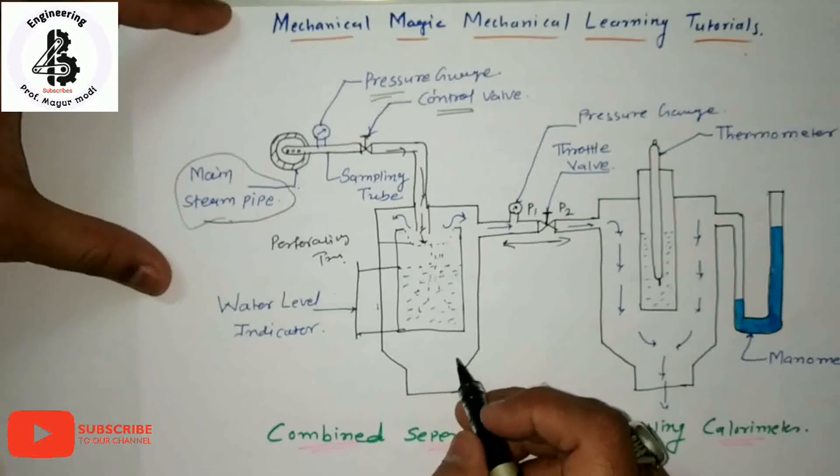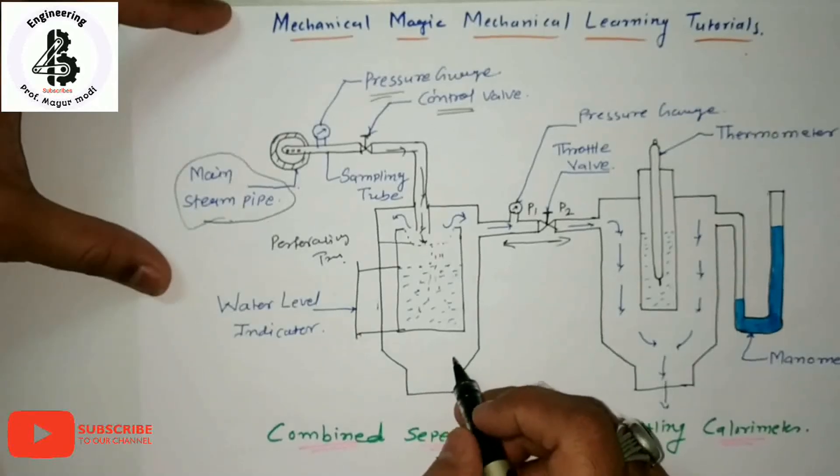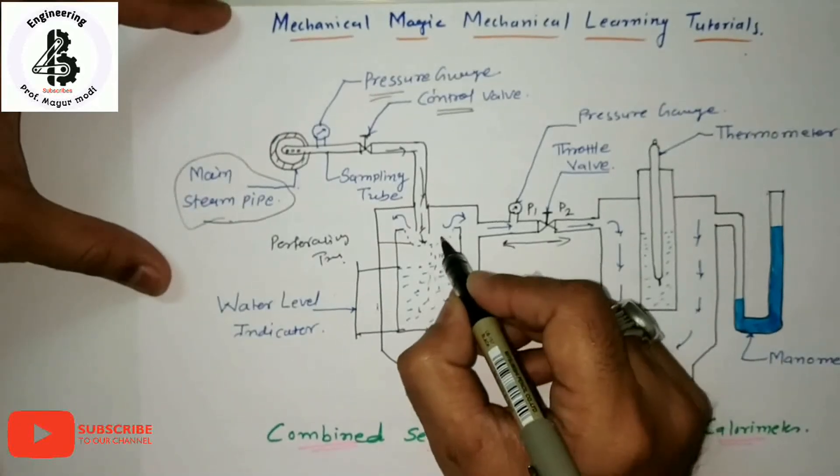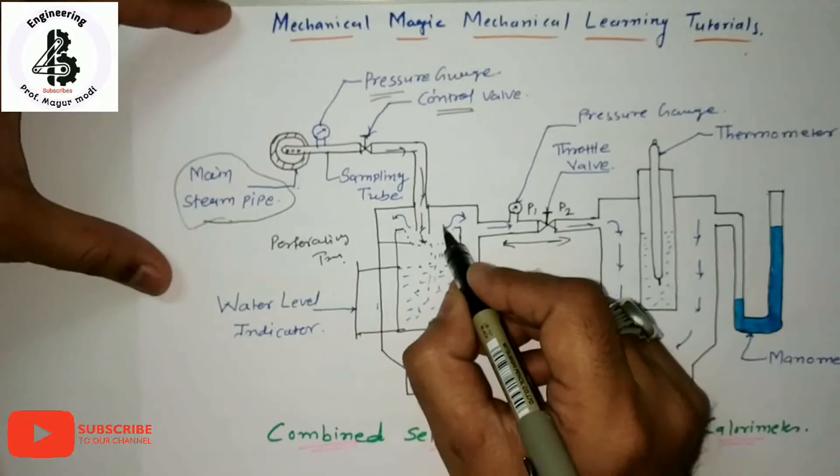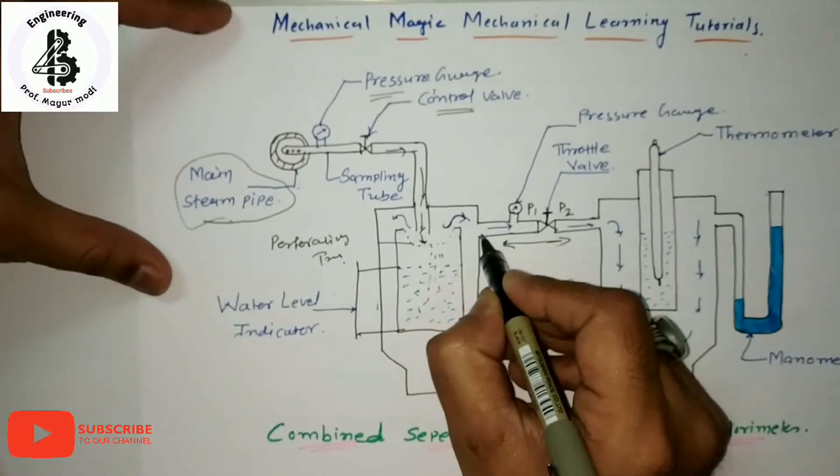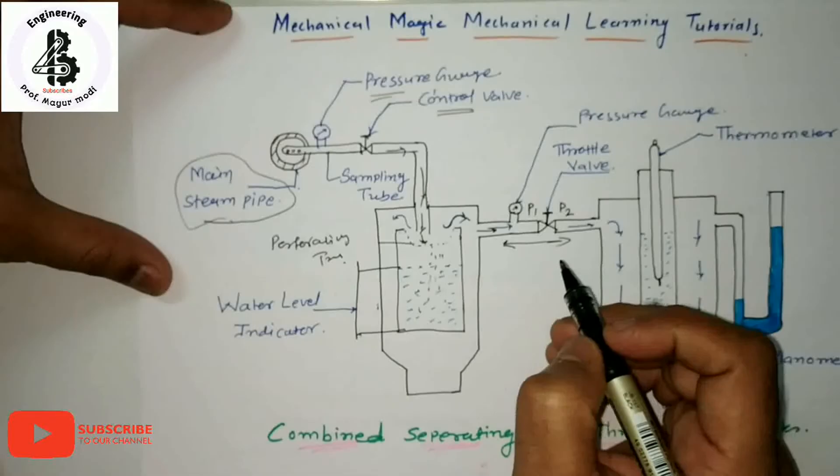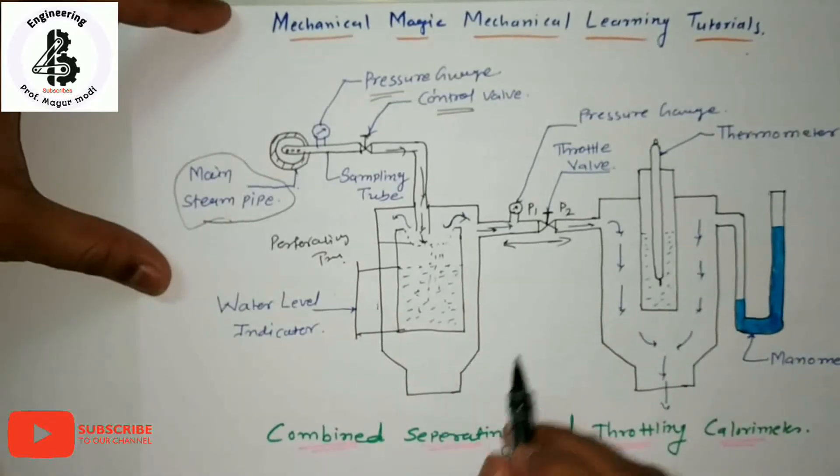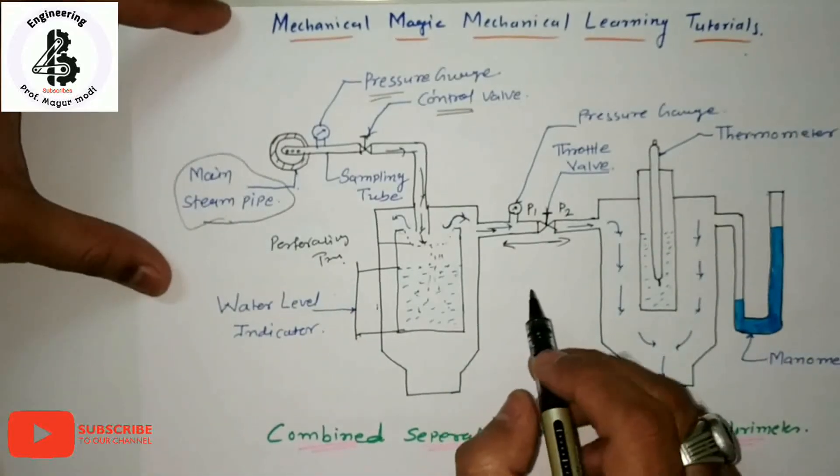After separating the water from the steam, only the steam passes through to the second section, which is connected with the throttling calorimeter. This is the combination effect of both calorimeters.